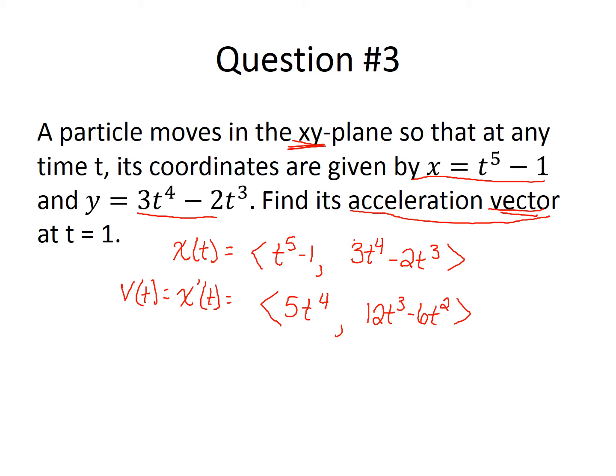To find my acceleration vector, I take the derivative of the velocity vector. Notice I'm not using the formula for second derivative of the slope, because I'm not finding the slope. I'm finding the acceleration vector. That gives me 20t^3 and 36t^2 minus 12t.